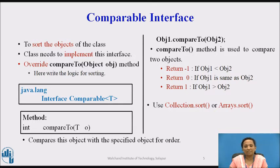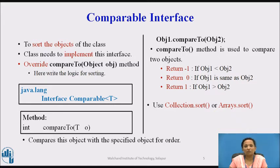The compareTo method returns -1 if object1 is smaller than object2. The compareTo method returns 0 if object1 is the same as object2. The compareTo method returns 1 if object1 is greater than object2. If any class implements comparable interface in Java, then a collection of those objects — either a list or array — can be sorted automatically by using collections.sort or arrays.sort method. Objects will be sorted based on their natural order defined by the compareTo method.